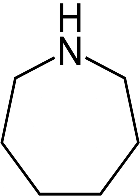A heterocyclic compound or ring structure is a cyclic compound that has atoms of at least two different elements as members of its rings. Heterocyclic chemistry is the branch of organic chemistry dealing with the synthesis, properties, and applications of these heterocycles. Examples of heterocyclic compounds include all of the nucleic acids, the majority of drugs, most biomass, and many natural and synthetic dyes.